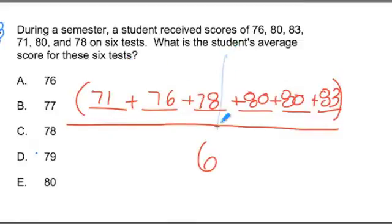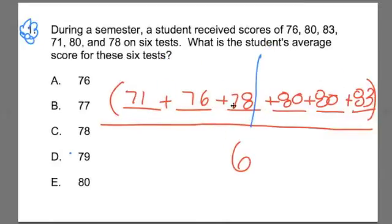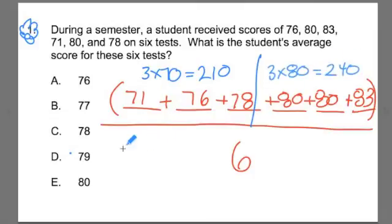Okay. There's a bunch of ways to do this real quick. One way is to break these up into ones and tens. And what I mean is, I have three 70s here. Or I could say three times seven. Three times seven is 21. But three times 70 is 210, right? And three times eight, because there's three 80s here. Three times eight is 24. But three times 80 is 240. And then I could add these up together. 210, 240. Really quickly, I get 450.